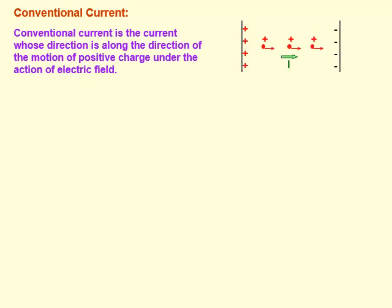Next is conventional current. Conventional current is the current whose direction is along the direction of motion of positive charge under the action of electric field. It is just opposite to the motion of electrons, because when we apply the electric field, the electron's motion is always opposite to the direction of the electric field.